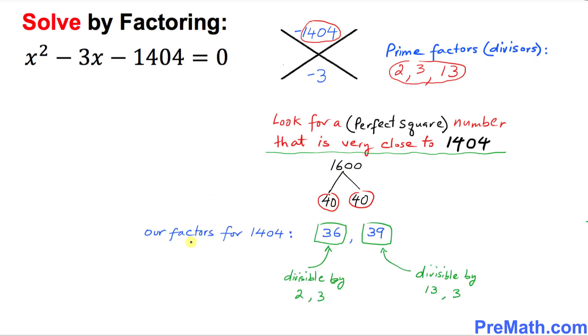Our factors for 1404 turn out to be 36 and 39. Now you might be wondering how we came up with these numbers. First, the difference of 36 and 39 is 3, which is what we are looking for. Also, these two numbers are divisible by our prime factors 2, 3, and 13. Make sure these numbers must be divisible by these prime factors. 36 is divisible by 2 and 3, and 39 is divisible by 13 and 3.